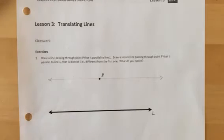I can't draw another one. So there's only one line passing through point P that's parallel to this given line right here.